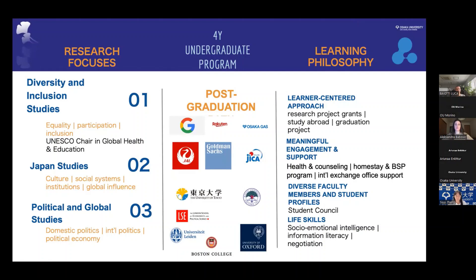You might wonder: if you study in this program, what can you do when you graduate? Two-thirds of our graduates finish by working in consultancy — at companies like Google, Rakuten, Goldman Sachs, JAICA, and Osaka Gas. One-third goes on to graduate studies, either in Japan — typically the University of Tokyo or Kyoto — or abroad at schools like the London School of Economics, Oxford, Boston College, or Harvard University.